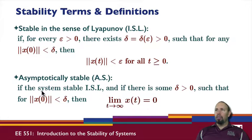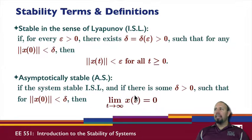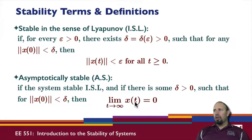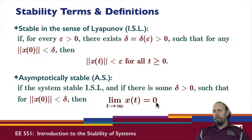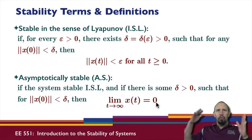Asymptotically stable, however, is about convergence. A system is asymptotically stable if it is stable in the sense of Lyapunov and, if the initial condition starts within a ball of radius delta, then the limit as time goes to infinity of x of t is zero. So this says the system will converge.